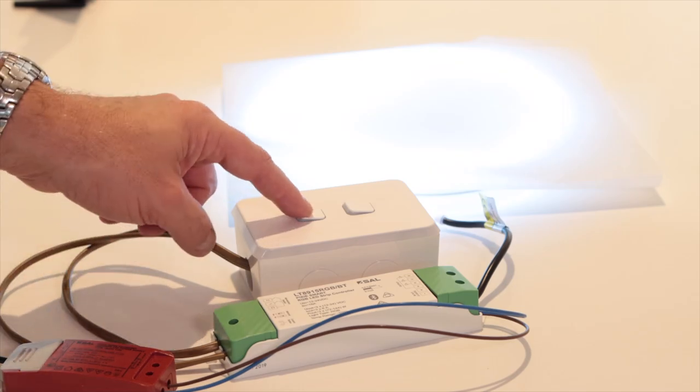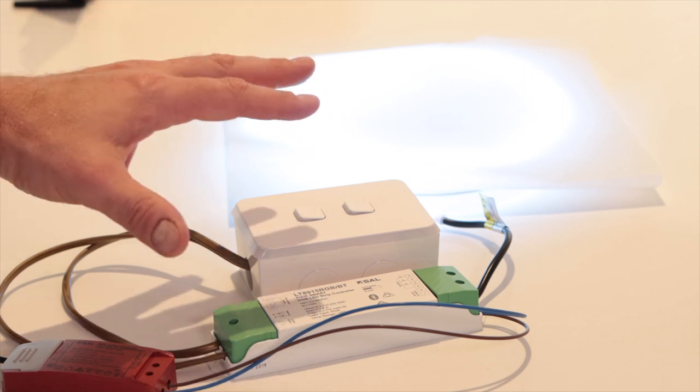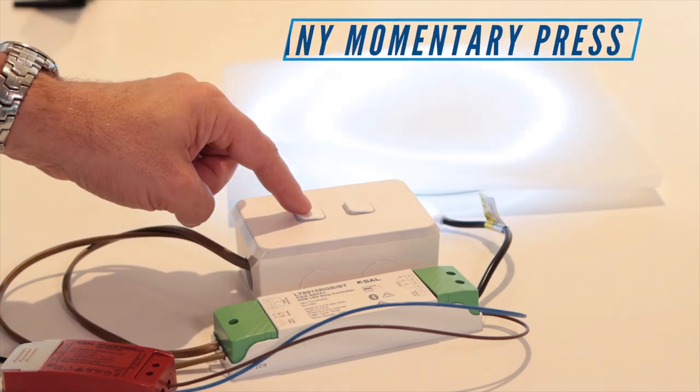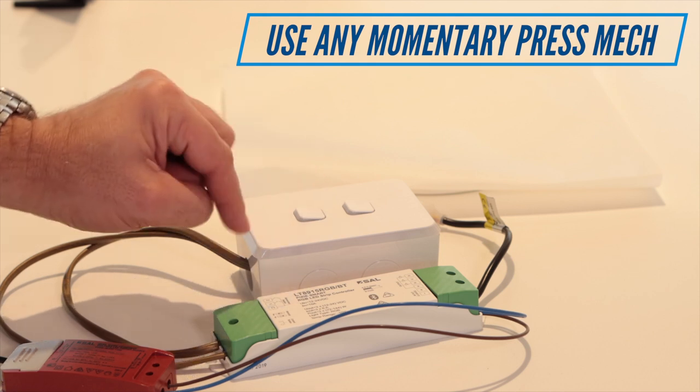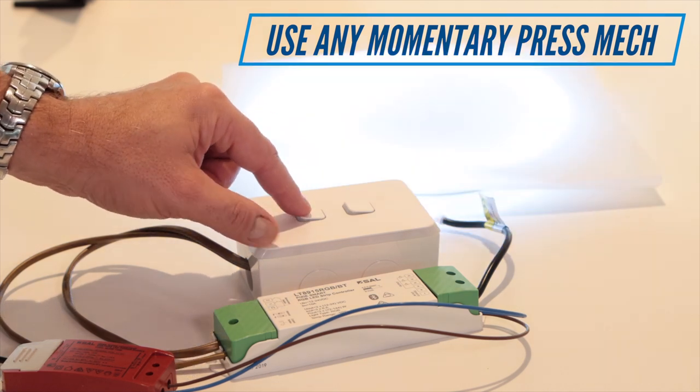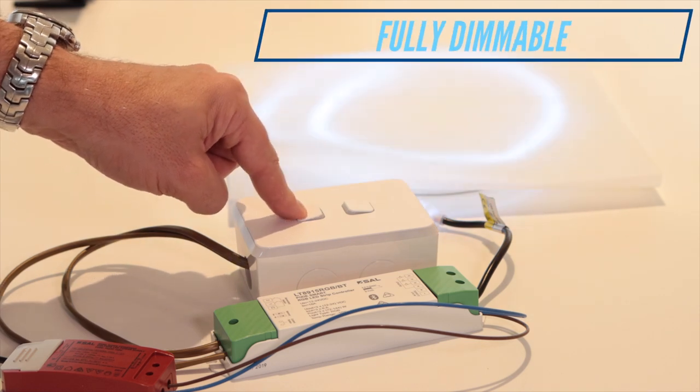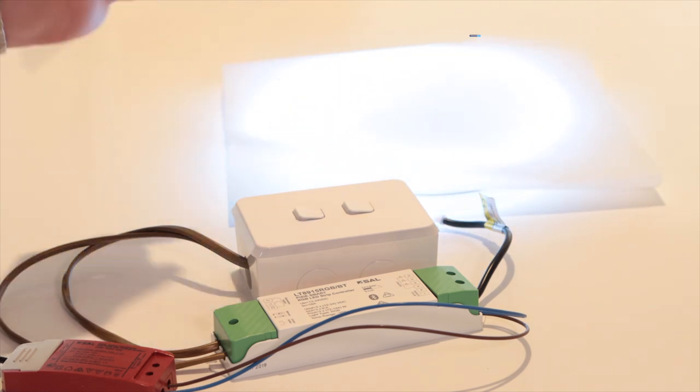So first of all, my dry contact - keeping in mind that all of this functionality is also available from the Pixie app - so I can turn it on and off directly from the dry contact input. On one of the inputs I can press and hold to dim the attached LEDs, press and hold to take it back up and turn it off.